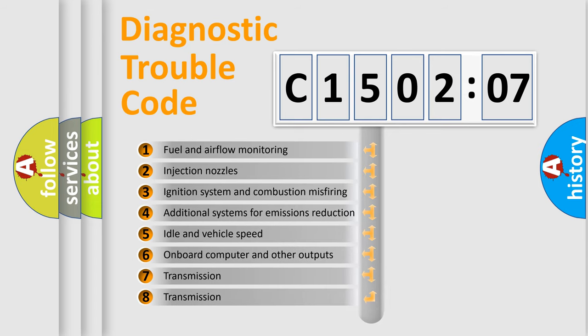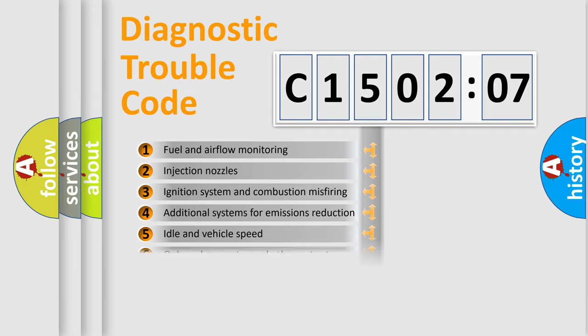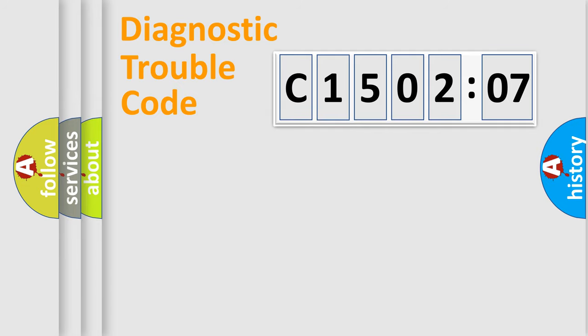The third character specifies a subset of errors. The distribution shown is valid only for the standardized DTC code. Only the last two characters define the specific fault of the group. The add-on to the error code serves to specify the status in more detail.